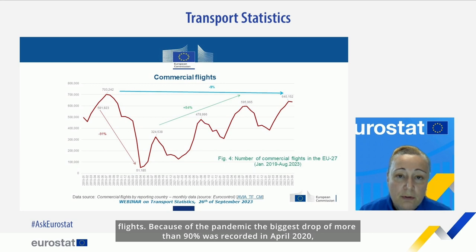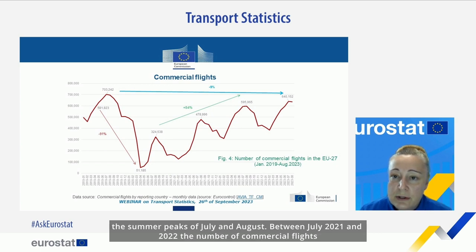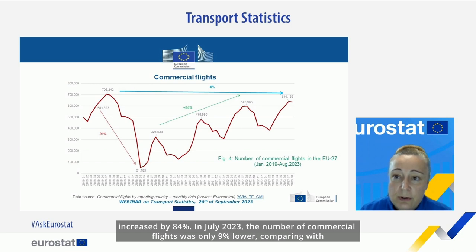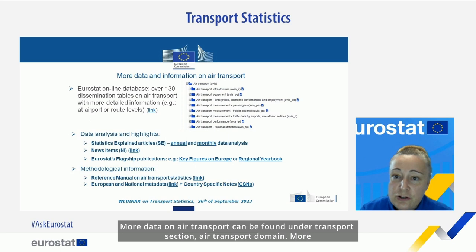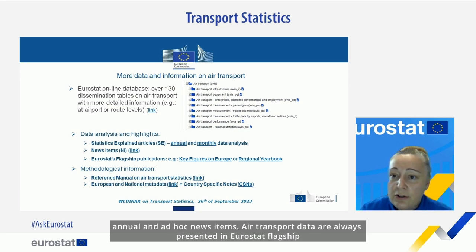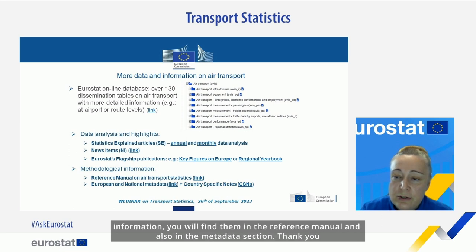We can also monitor what is happening in air transport by analysing the number of commercial flights. Because of the pandemic, the biggest drop of more than 90% was recorded in April 2020 compared with April 2019. The recovery trend since then has been clearly visible, especially with the summer peaks of July and August — between July 2021 and 2022 the number of commercial flights increased by 84%. In July 2023, the number of commercial flights was only 9% lower than July 2019. More data on air transport can be found under the air transport domain. More analytical text, graphs and maps can be found in the two statistics explained articles, in annual and ad hoc news items, and in Eurostat flagship publications. Thank you very much.